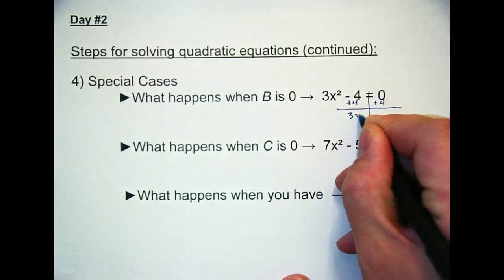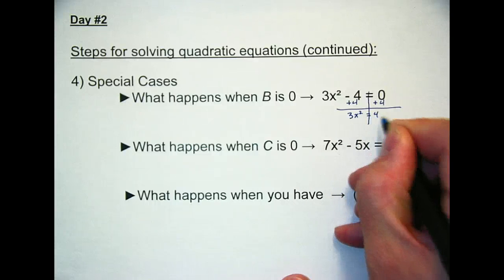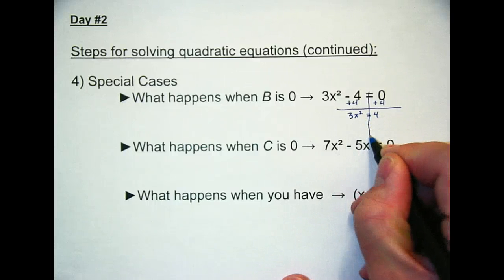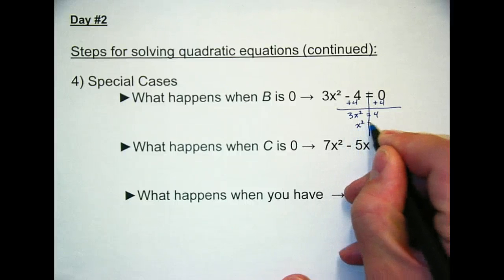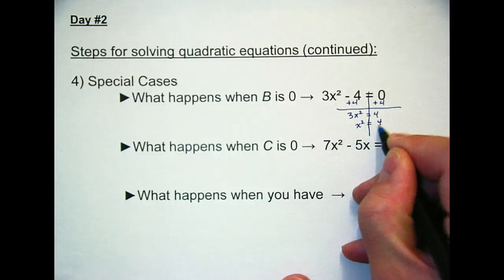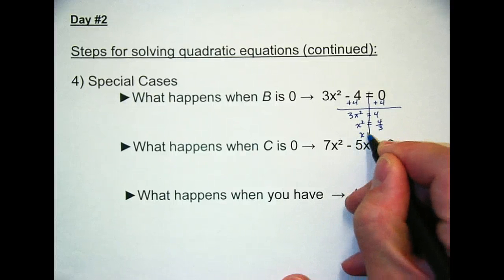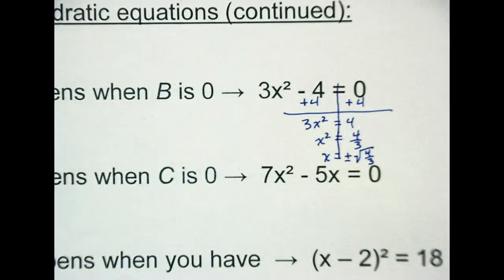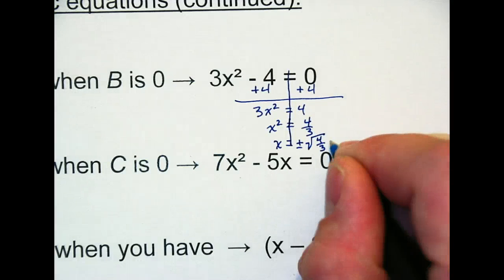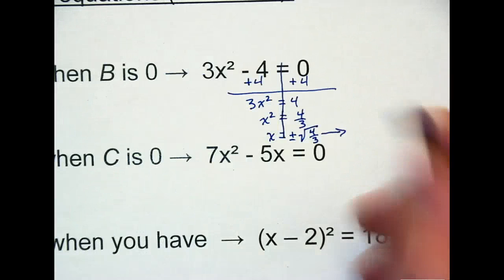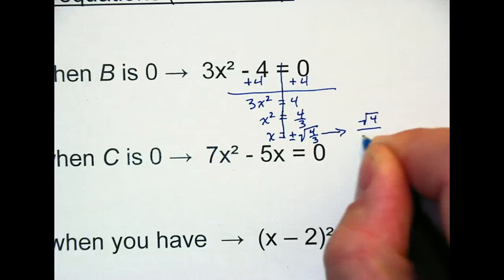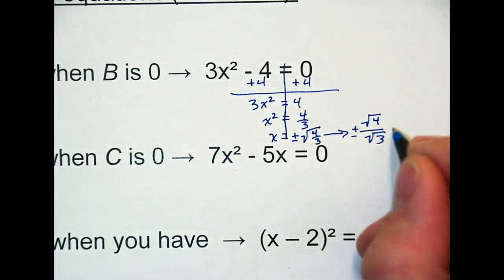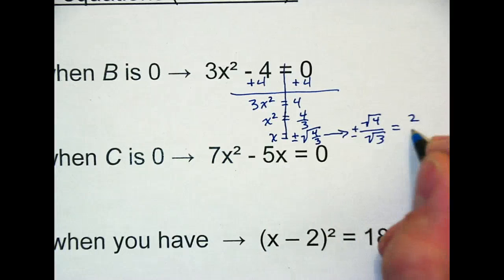So adding 4, you get 3x squared equals 4. Divide both sides by 3, you get x squared equals 4 thirds. And then taking the square root, you get x equals plus minus the square root of 4 thirds. Now we can't leave it in that format. We're not going to leave a fraction inside a radical like that.